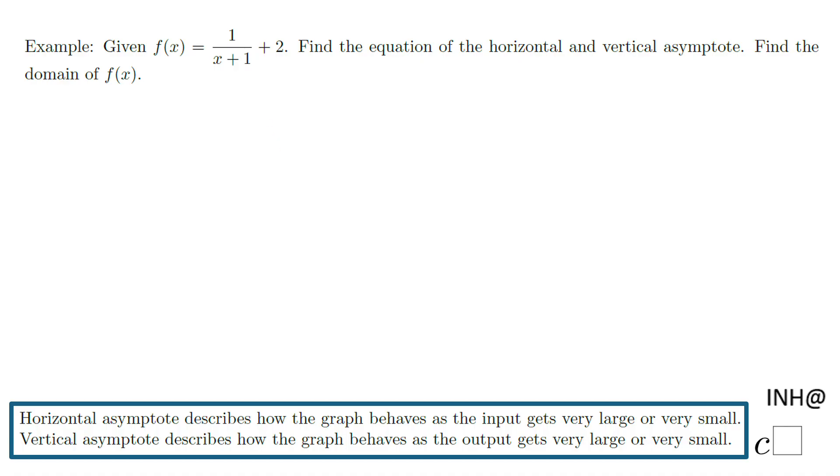Let's take a look first at the horizontal asymptote. Down here I said horizontal asymptote describes how the graph behaves as the input gets very large or very small. So an easy way is to think what happens when x is getting large.